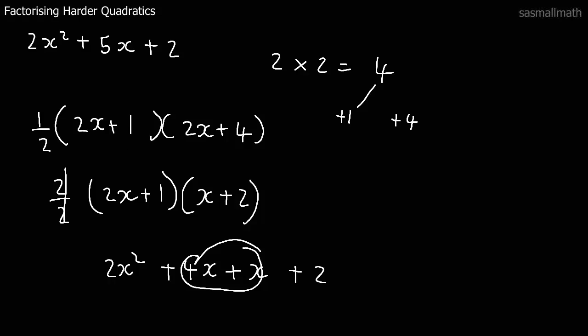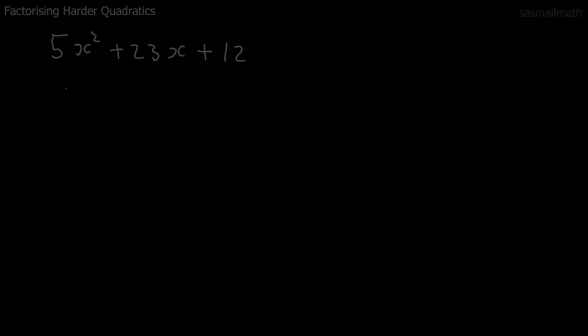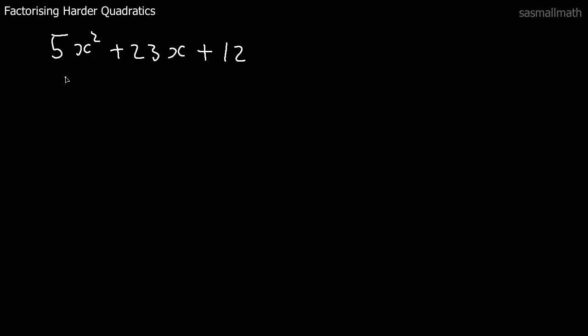Okay, let's do another one. Okay, we've got this one now. Five x squared plus twenty three x plus twelve. And we'll factorize it. So first thing, I think what we'll do is actually create this first.